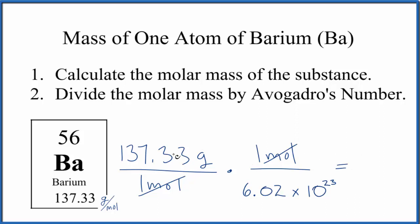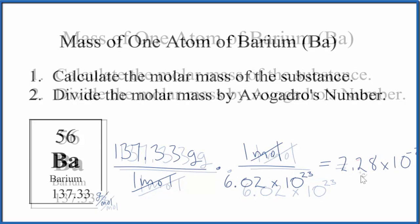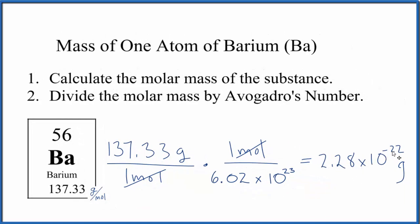In essence, we're just dividing this atomic mass, average atomic mass, by Avogadro's number. And when we do this, we get 2.28 times 10 to the negative 22nd grams. And this makes sense. This is a small number. Atoms have a very small mass.